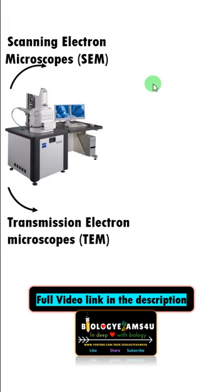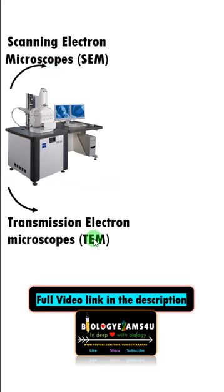In an electron microscope, the source of illumination is electrons. The two types of electron microscope are the scanning electron microscope and the transmission electron microscope.